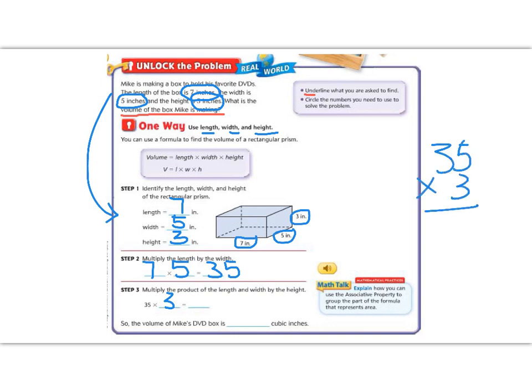Five times three is 15. Three times three is nine, plus one is 10. So the volume of his box is 105 inches cubed. So the volume of his DVD box is 105 cubic inches. Great job so far, fifth graders.